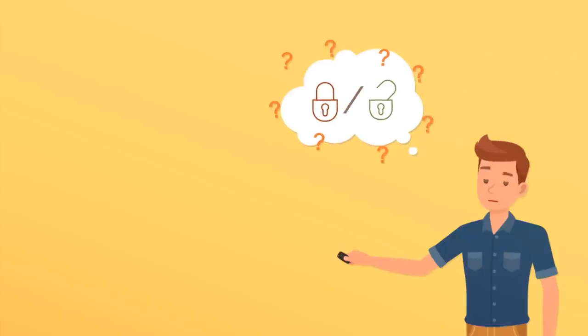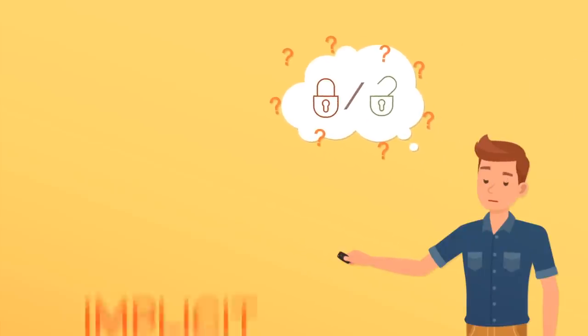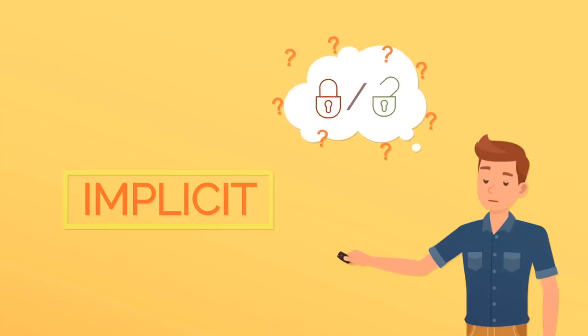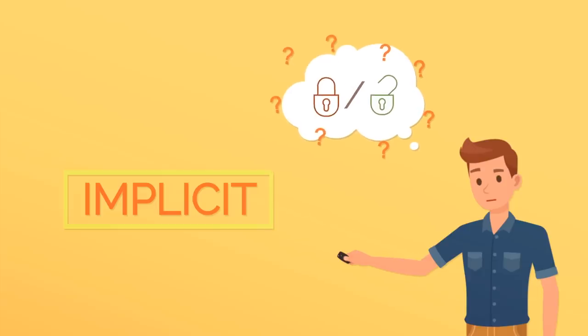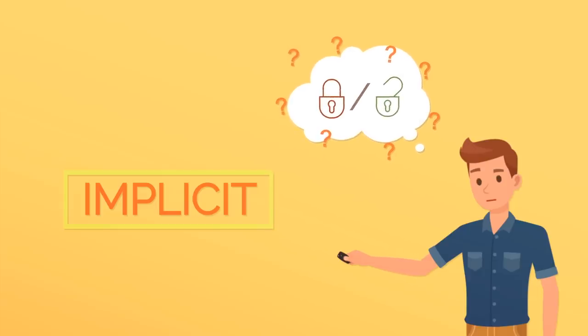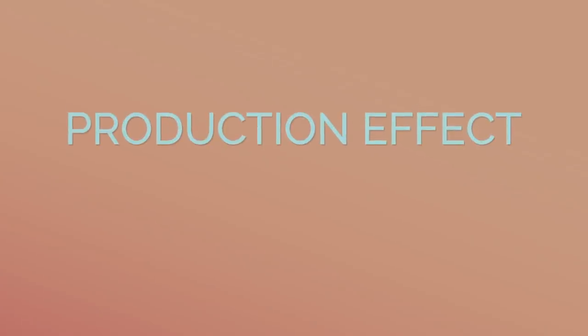Habitual activities like locking your car fall into your implicit memory. We do them so often that it doesn't make sense to store each one as a conscious thought. Since you're essentially doing it without thinking, it's hard to be 100% sure that it actually happened.